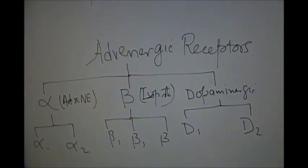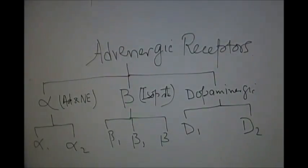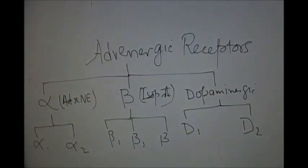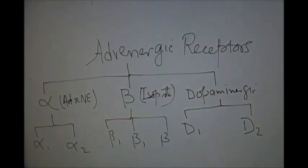The alpha receptors are divided into alpha 1 and alpha 2. Beta receptors are of three types: beta 1, beta 2, and beta 3. Dopaminergic receptors are D1 and D2.